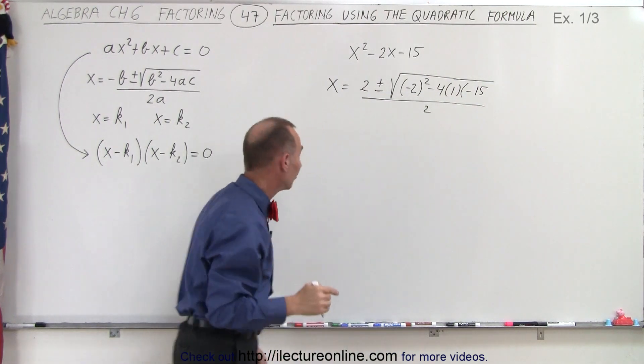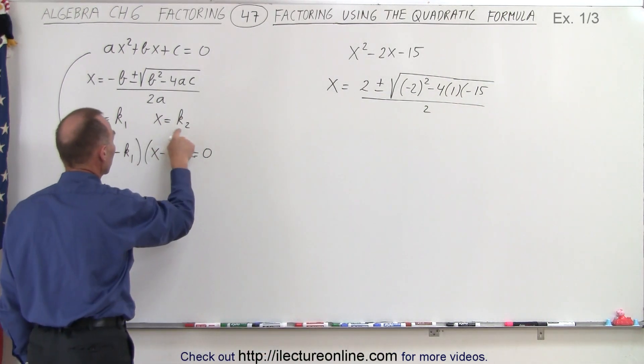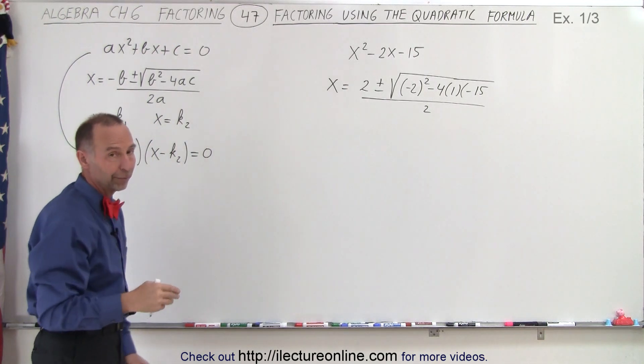So what I'm doing here is I'm finding the two constants k₁ and k₂, and I can then write the factored form. That's essentially what we're doing with the quadratic formula.